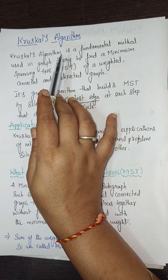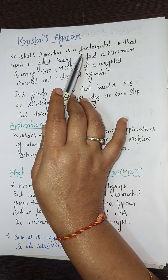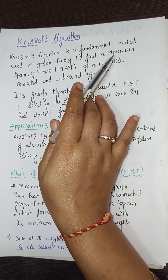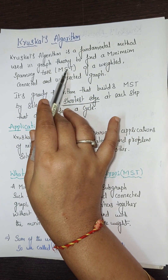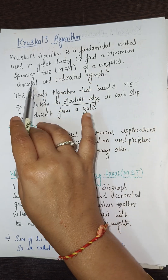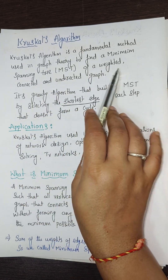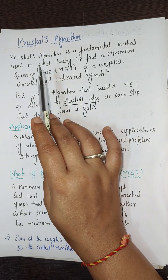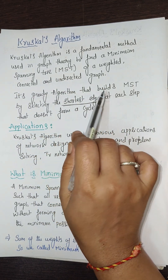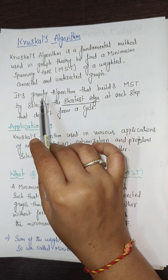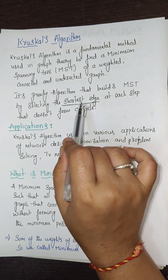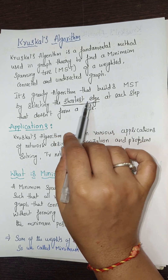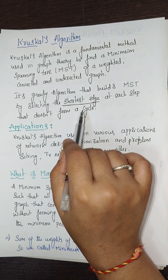Kruskal's algorithm is a fundamental method used in graph theory to find the MST — minimum spanning tree — of a weighted, connected, and undirected graph. It is a greedy algorithm that builds the MST by selecting the shortest edges at every step, choosing only those that do not form a cycle.